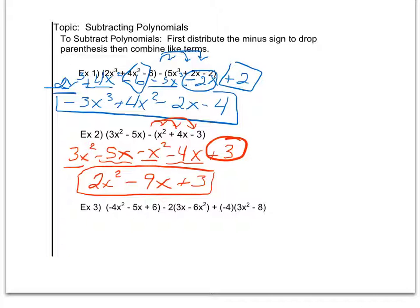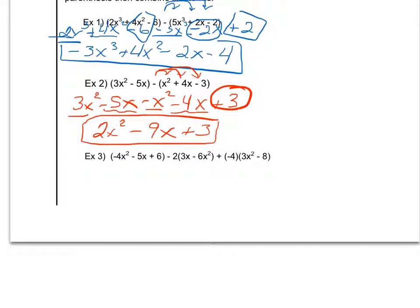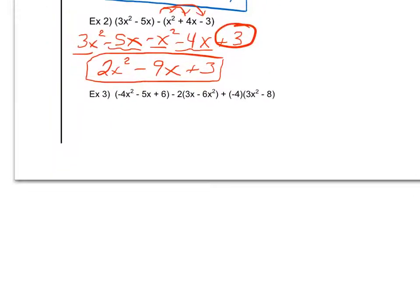Final example. Example 3, I notice I have quite a bit more going on on this one. That's okay, I'll just take it one piece at a time. So first thing I'm going to do is I'm going to come to my first set of parentheses. I notice there's no like terms inside and there's nothing to distribute in the front. So I'm just going to go ahead and drop minus 4x squared minus 5x plus 6 down.